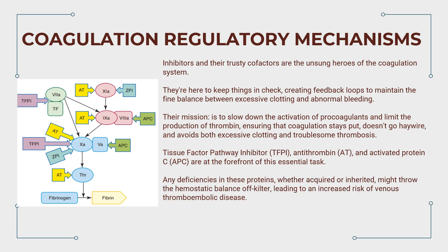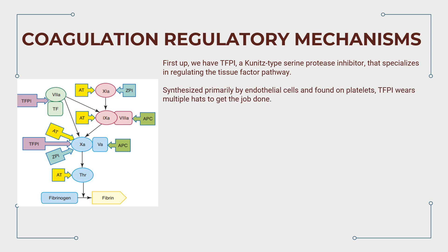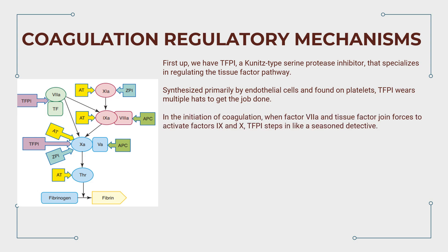First up, we have TFPI, a Kunitz-type serine protease inhibitor. This unsung hero specializes in regulating the tissue factor pathway. Synthesized primarily by endothelial cells and found on platelets, TFPI wears multiple hats to get the job done. In the initiation of coagulation, when factor VIIa and tissue factor join forces to activate factors IX and X, TFPI steps in and inhibits coagulation in a two-step process.